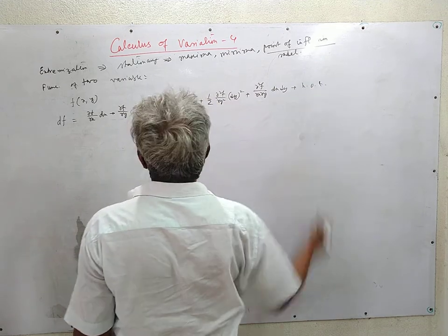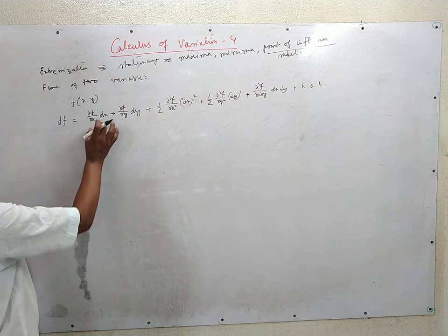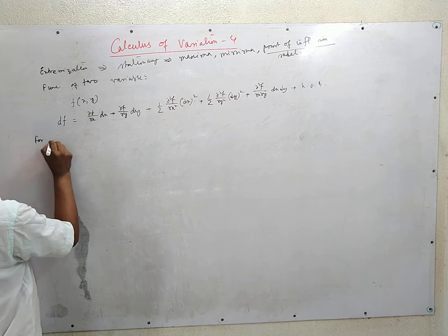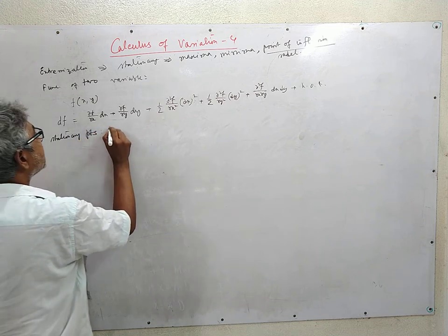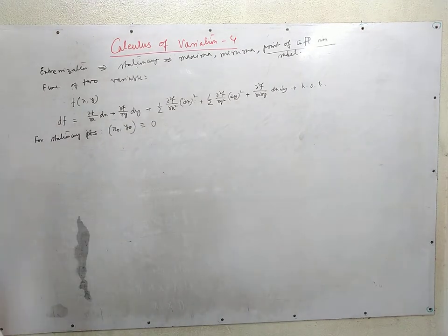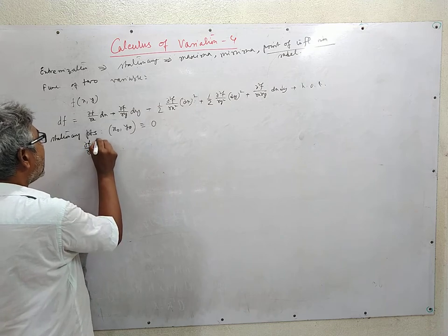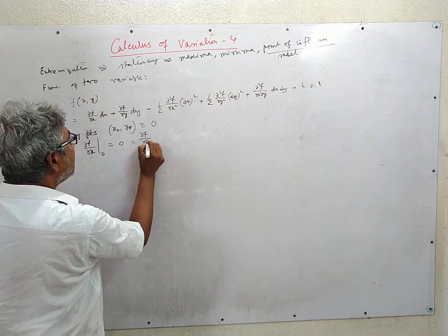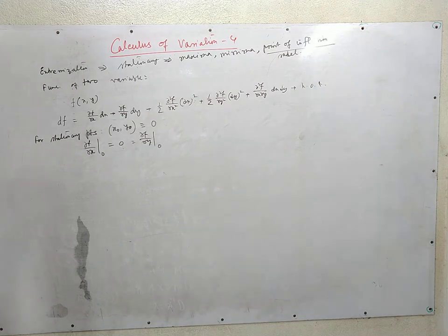The stationary points are characterized by x = x₀, y = y₀, written compactly as the point O. For stationary points we must have the first derivatives equal to zero: ∂f/∂x at O = 0 and ∂f/∂y at O = 0. These are two simultaneous equations, and the two unknowns x₀ and y₀ can be determined from them.